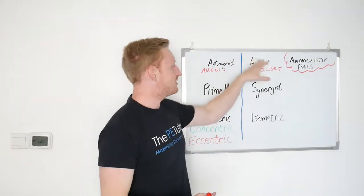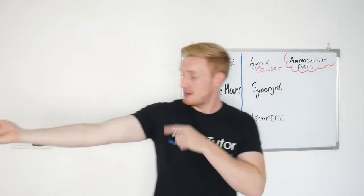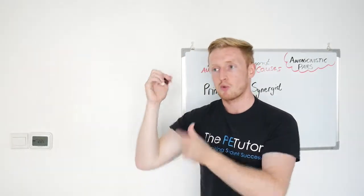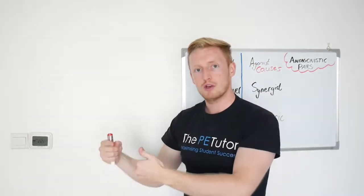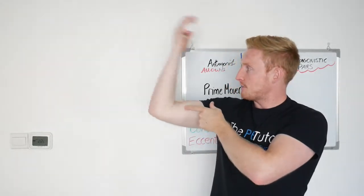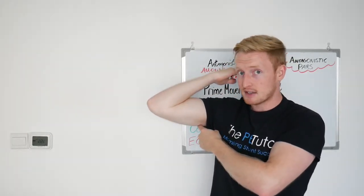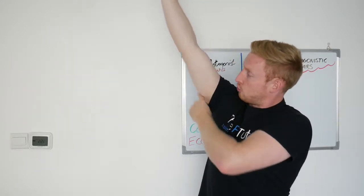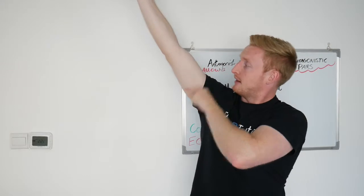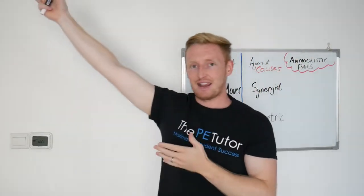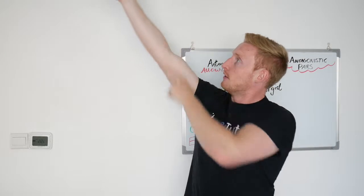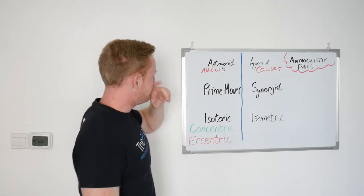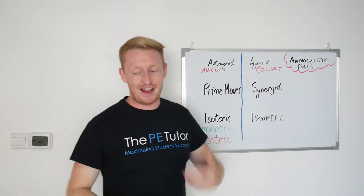A muscle is constantly switching between the two. The bicep isn't always the agonist and the tricep isn't always the antagonist. They switch roles whenever the movement action reverses. When that elbow flexes, bicep is agonist, tricep is antagonist. Whenever it's a tricep extension or elbow extension, the tricep is now the agonist and the bicep is the antagonist, because the bicep is allowing that bone to move in that direction.